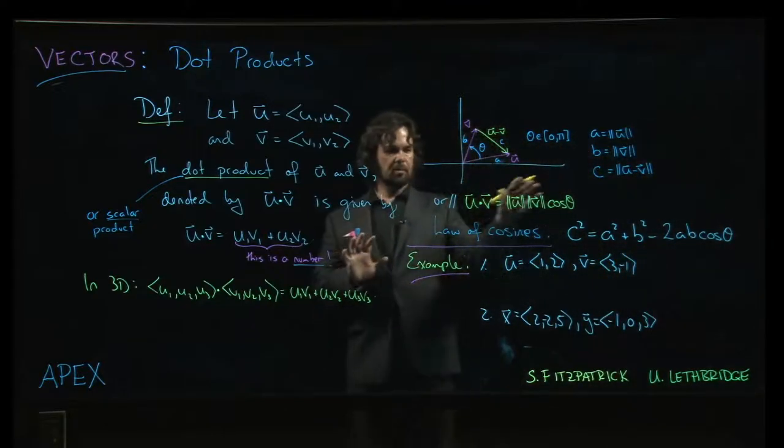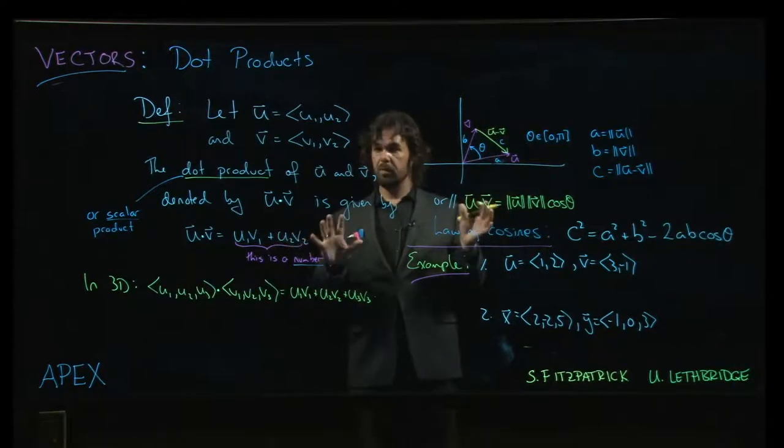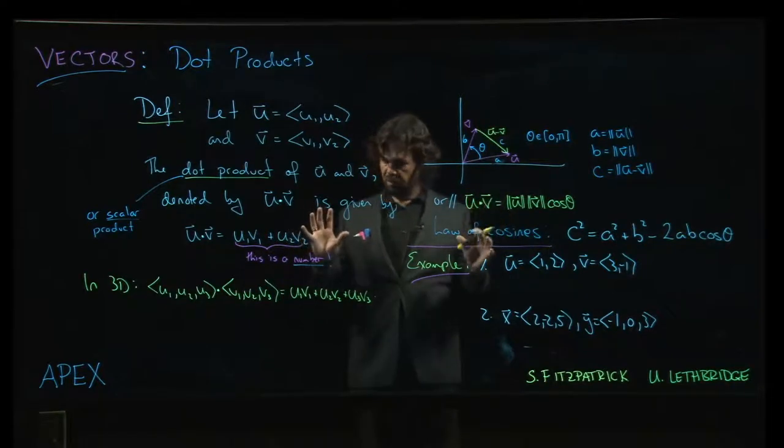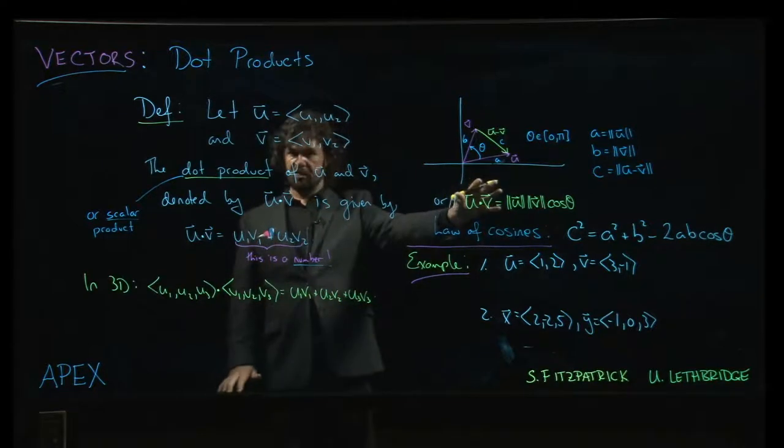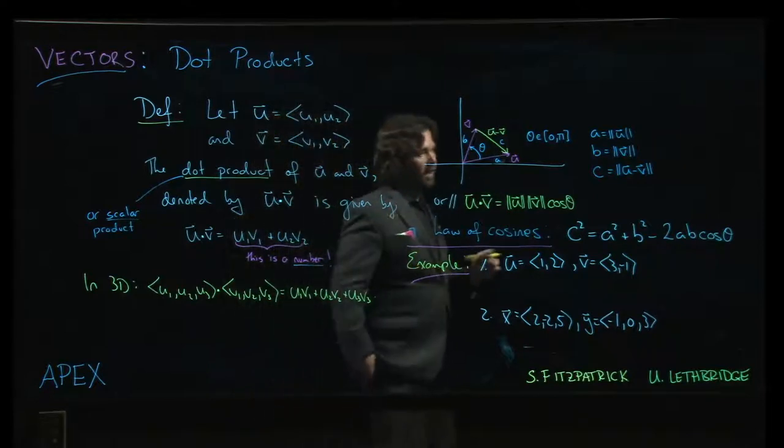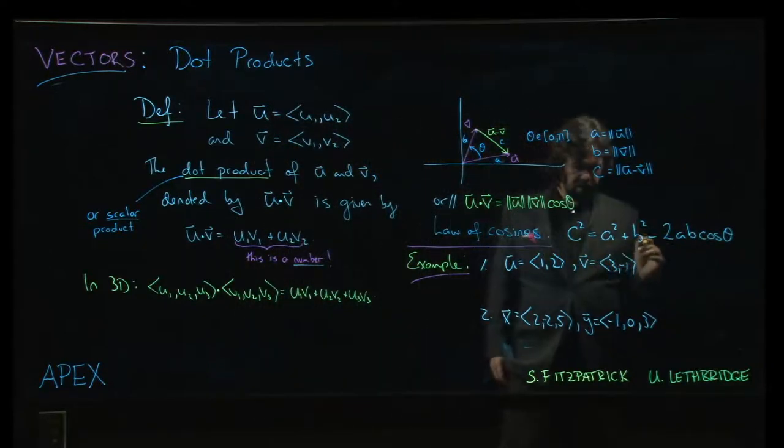I've promised an explanation of this connection between two different ways of computing dot products. This kind of very straightforward arithmetic formula versus this geometric one using angles and magnitudes. And we'll get there,